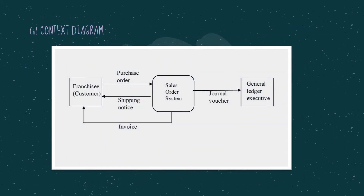Now we go to the context diagram for the sales order system. There are two external entities which are the franchisee and the general ledger. The flow starts when the franchisee places an order. The franchisee will then receive a shipping notice from the shipping assistant and an invoice from the billing clerk. Lastly, the general voucher and debtor summary will be sent to the general ledger.